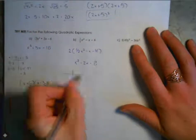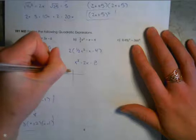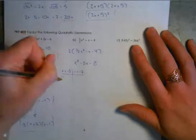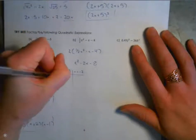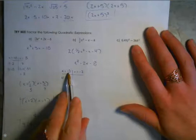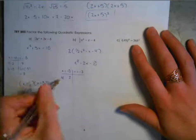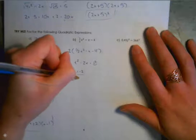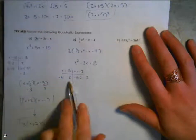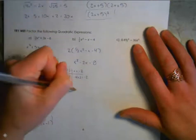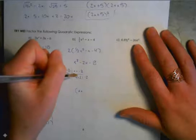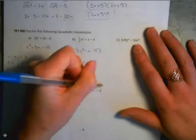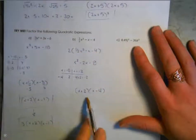I'm looking for two numbers that multiply to negative 8 and add to negative 2. 4 times 2 works — if I start with negative 4 and add 2, I get negative 2. So negative 4 plus 2 equals negative 2. My numbers are negative 4 and positive 2. Setting up brackets: x minus 4 and x plus 2.